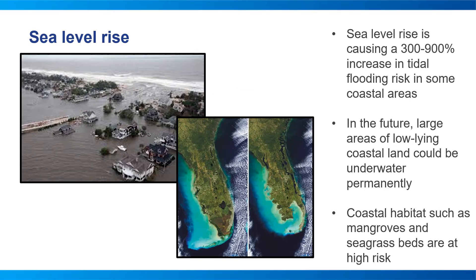Sea level rise poses a serious threat to coastal life around the world. Consequences include increased intensity of tidal flooding, storm surges, and damage to coastal areas. Low-lying coastal land can be completely submerged, such as mangroves and seagrass beds. This can impact fisheries by disrupting important fish nursery habitat and damaging ports, harbors, and coastal infrastructure.